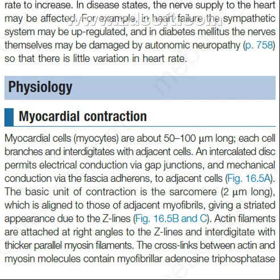Myocardial cells, or myocytes, are about 50 to 100 micrometers long. Each cell branches and interdigitates with adjacent cells. An intercalated disc permits electrical conduction via gap junctions and mechanical conduction via the fascia adherens to adjacent cells.